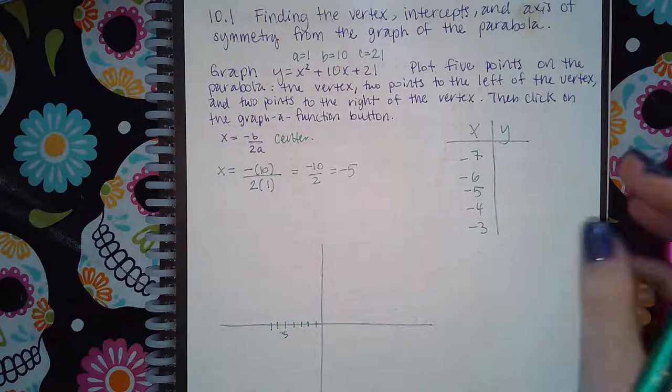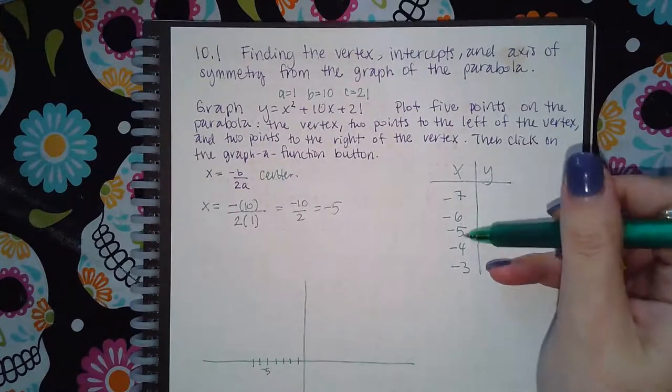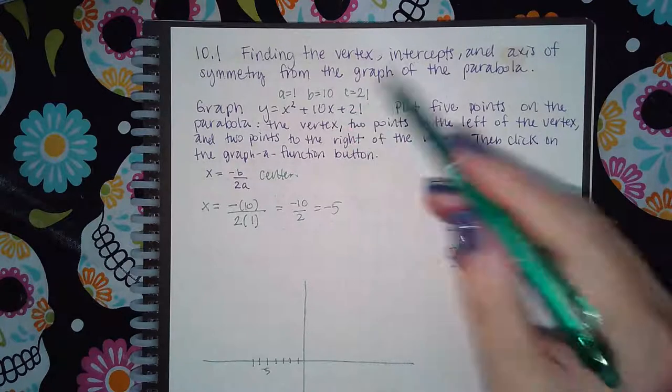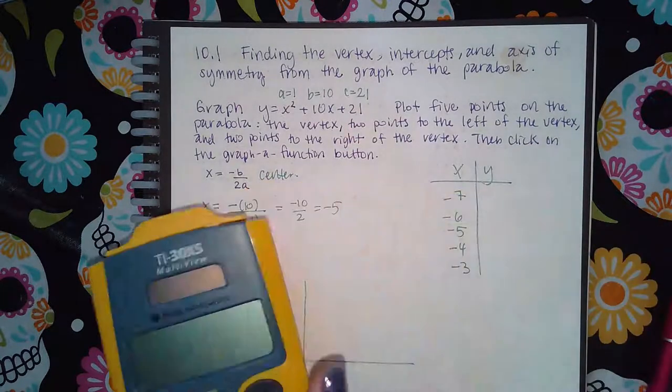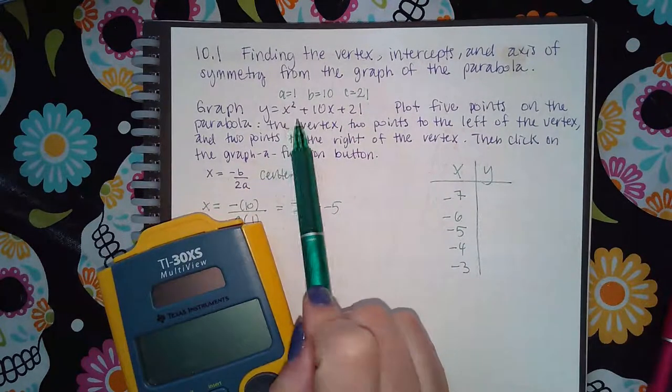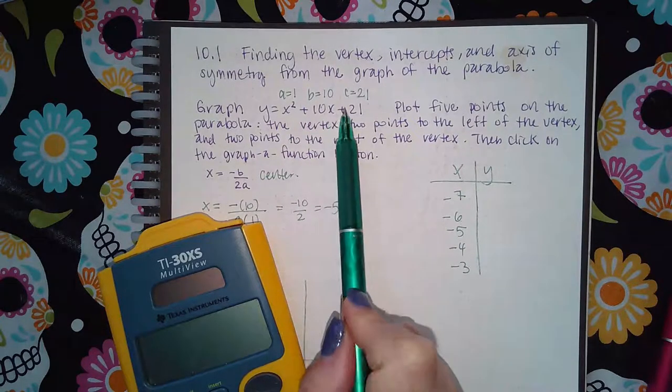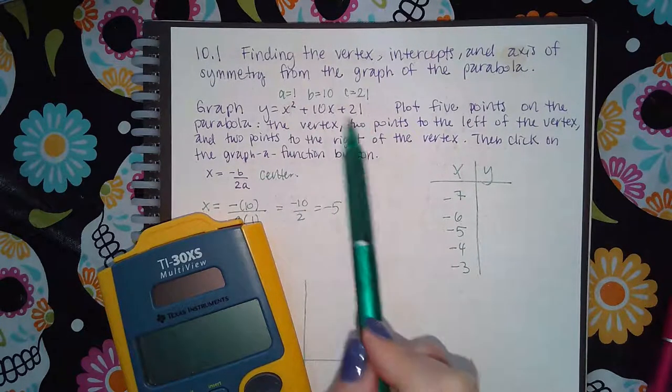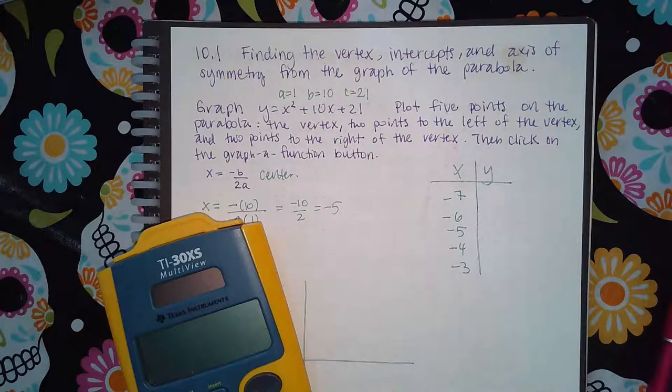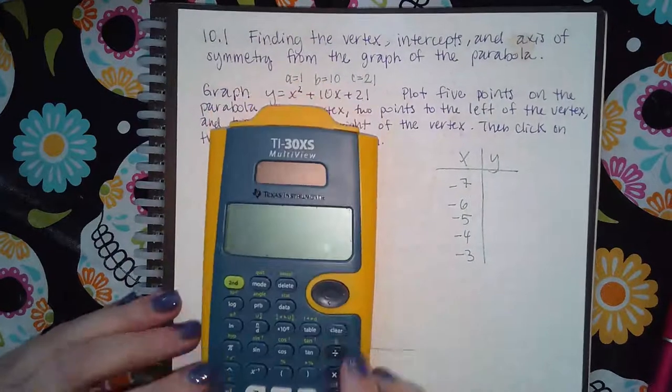All I'm going to do is plug each and every one of these values into this equation. You can do parentheses, negative 7 squared plus 10 times parentheses around your negative 7 plus 21, and then go back and just change the values for each one. So I'm going to show you what I mean here.